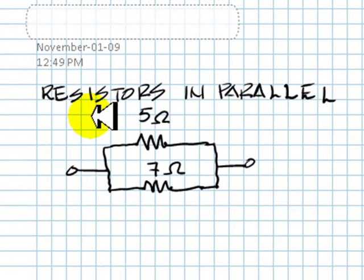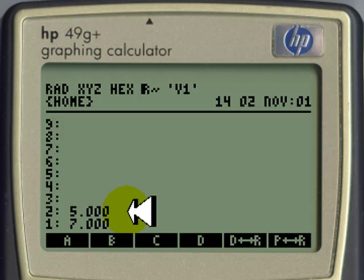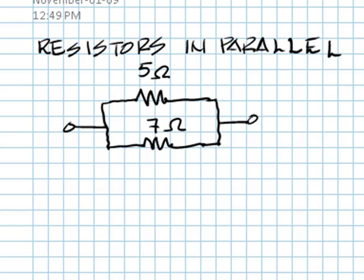Let's begin with how to program your calculator to compute two resistors in parallel. Consider these two 5 ohm and 7 ohm resistors, and consider also that those values of resistances are already at the bottom of the stack, like this.